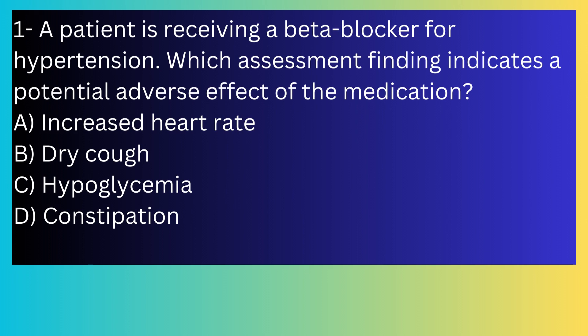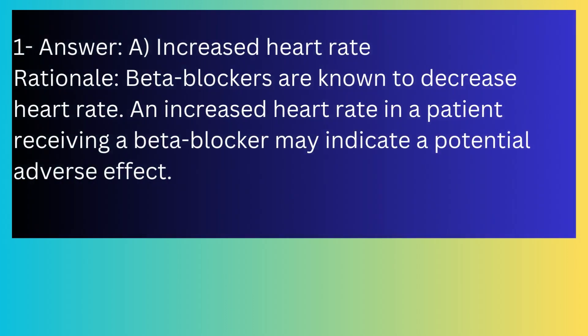Question number one: A patient is receiving a beta-blocker for hypertension. Which assessment finding indicates a potential adverse effect of the medication? A) Increased heart rate, B) Dry cough, C) Hypoglycemia, D) Constipation. The answer is A, increased heart rate. Beta-blockers are known to decrease heart rate, and an increased heart rate in a patient receiving a beta-blocker may indicate a potential adverse effect.